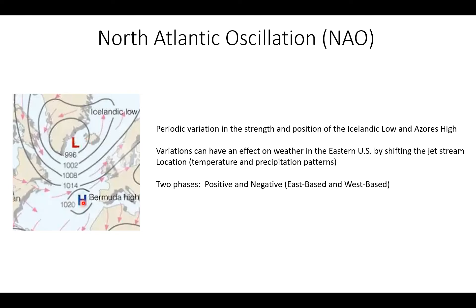Throughout time, there are variations that can have an effect between these pressure patterns and these two systems. We can have variations in the strength and positioning of the systems that can affect the weather in the eastern United States, resulting in a shifting jet stream location. That shifting jet stream location results in different temperature and precipitation patterns. There are two specific phases to the North Atlantic Oscillation: the positive phase and the negative phase.